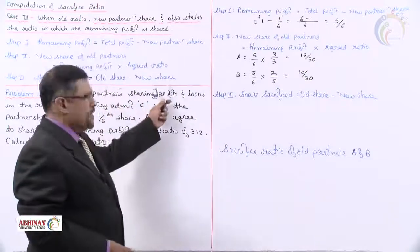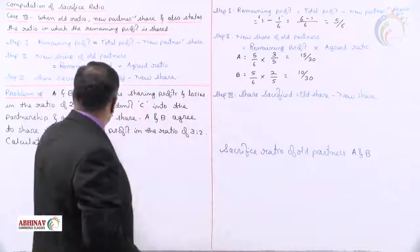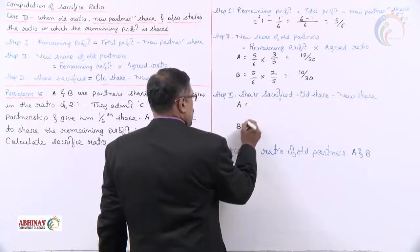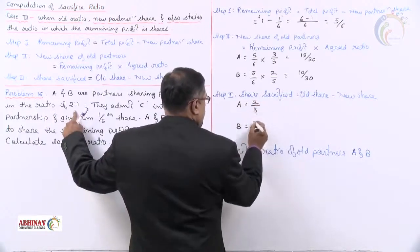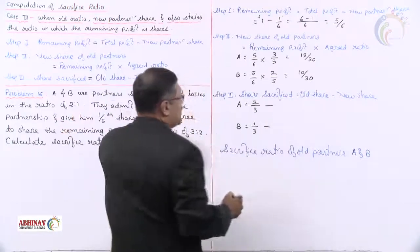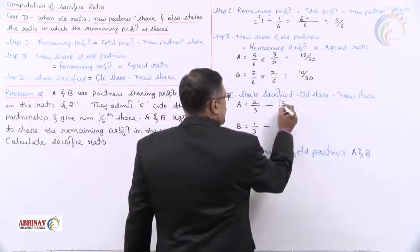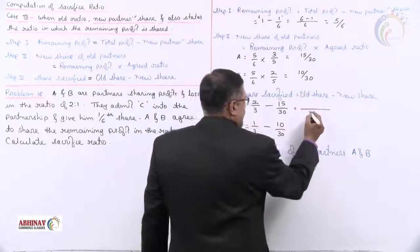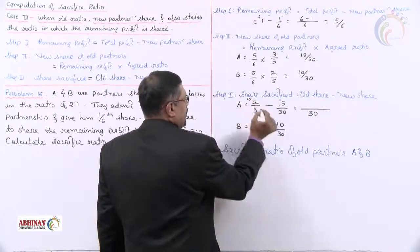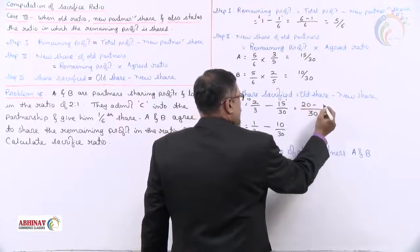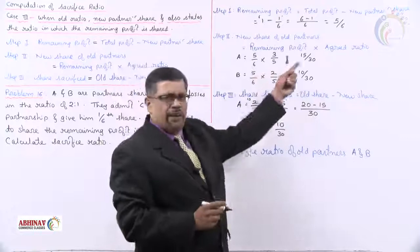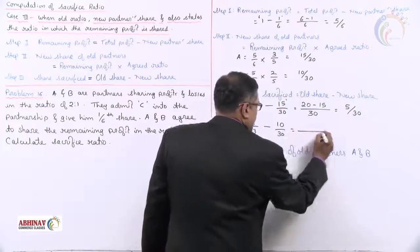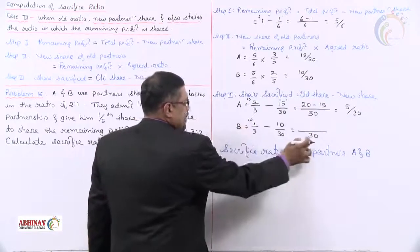Step 3 — share sacrificed equals old share minus new share. Old ratio is 2:1, giving 2/3 and 1/3. LCM of 3 and 30 is 30. A's old share: 2/3 = 20/30; A's sacrifice = 20/30 minus 15/30 = 5/30. B's old share: 1/3 = 10/30; B's sacrifice = 10/30 minus 10/30 = 0/30.